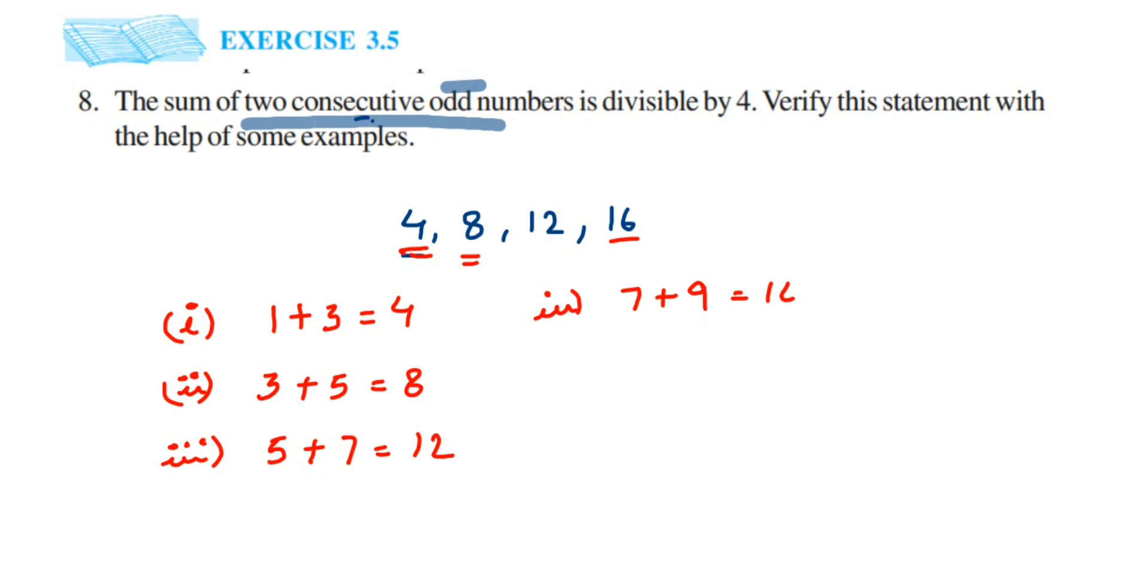You can see now it's forming a pattern here. 5 plus 7 is 12, 7 plus 9 is 16, so 9 plus the next odd number, which is 11, equals 20.